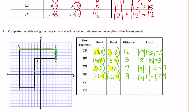Segment EF: E was at negative 2, negative 4 and F is at negative 7, negative 4. They differ in their x-coordinates. Since they're both negative, they're on the same side of 0, so we subtract. Absolute value of negative 7 minus absolute value of negative 2 equals 5.